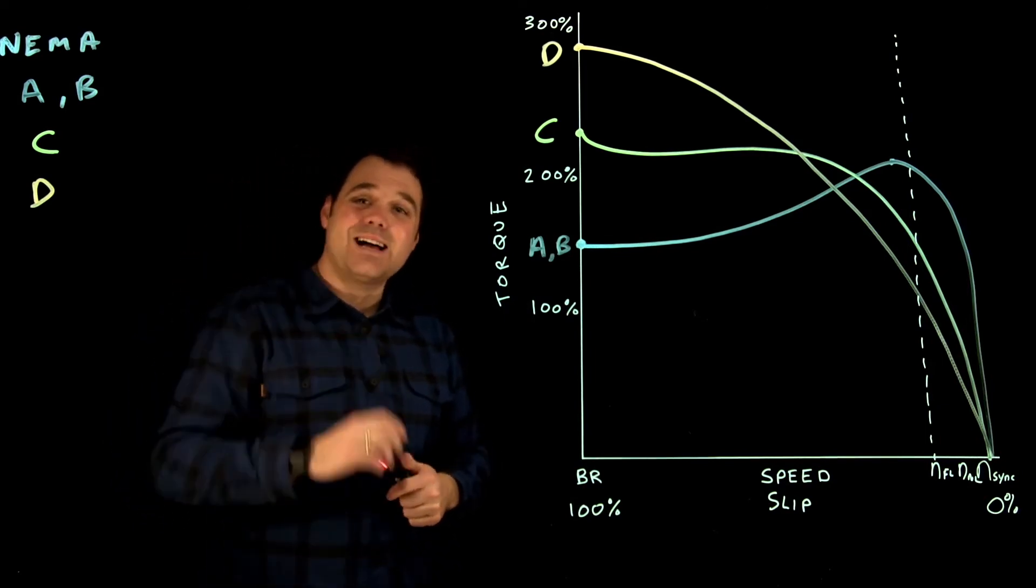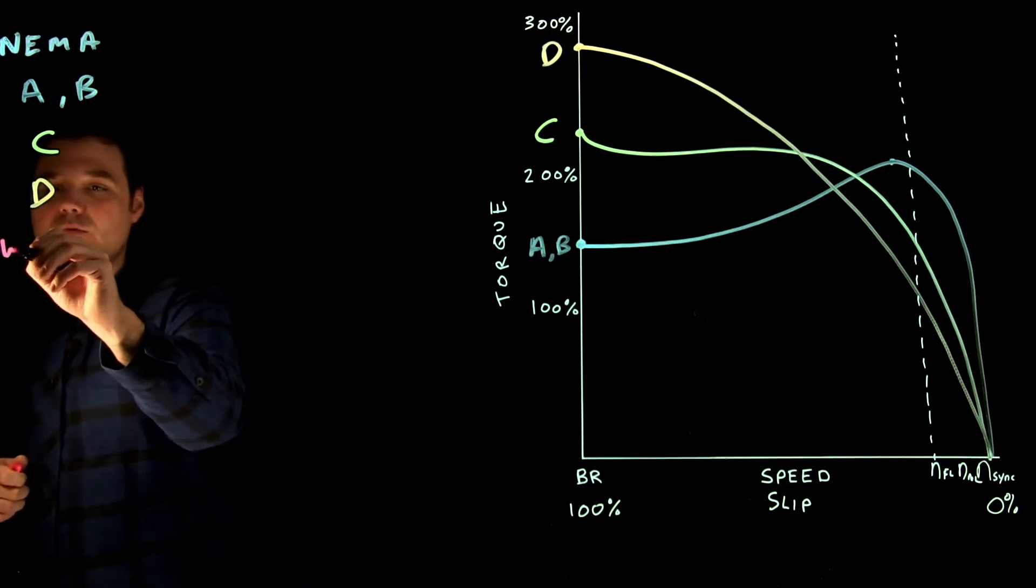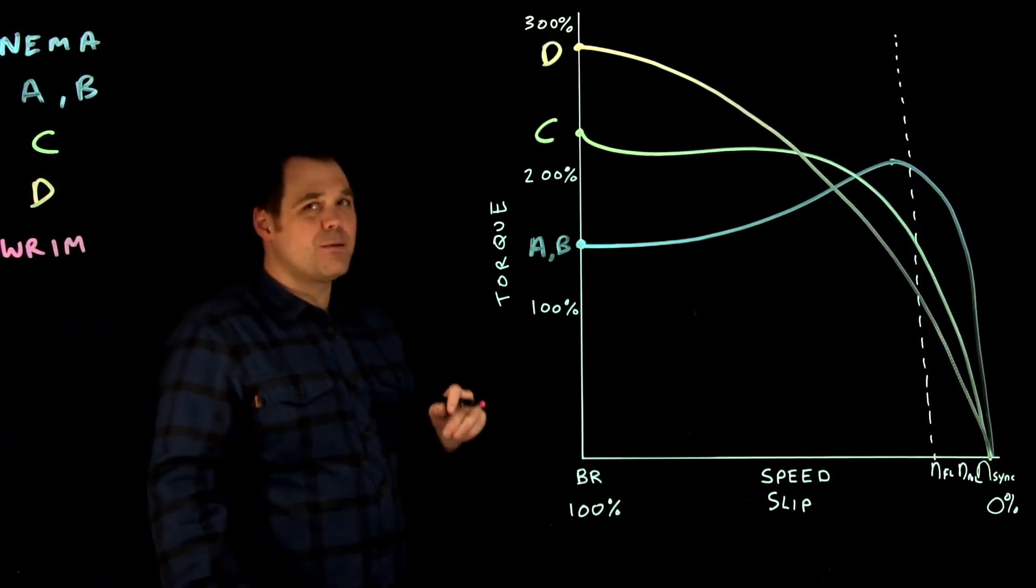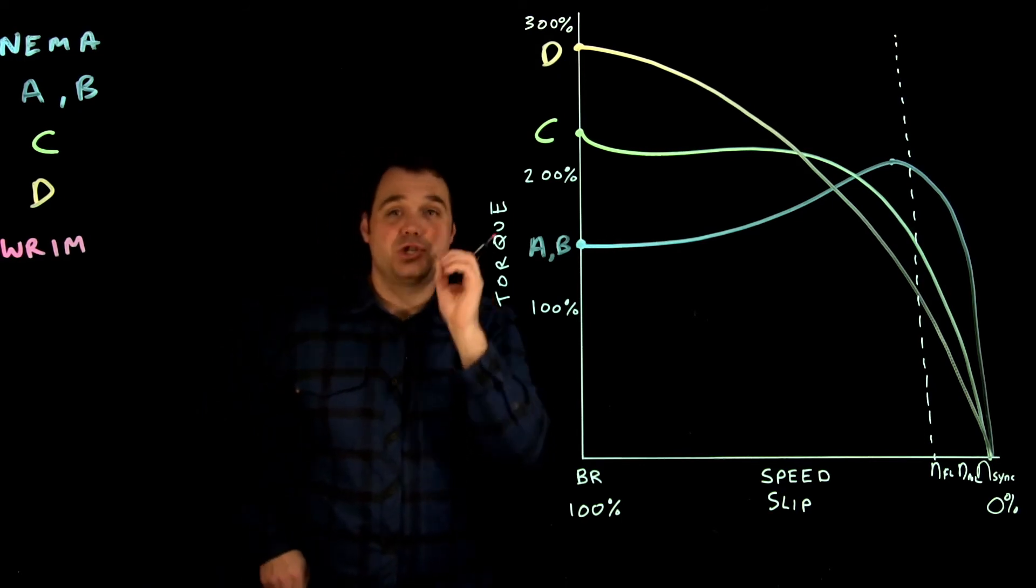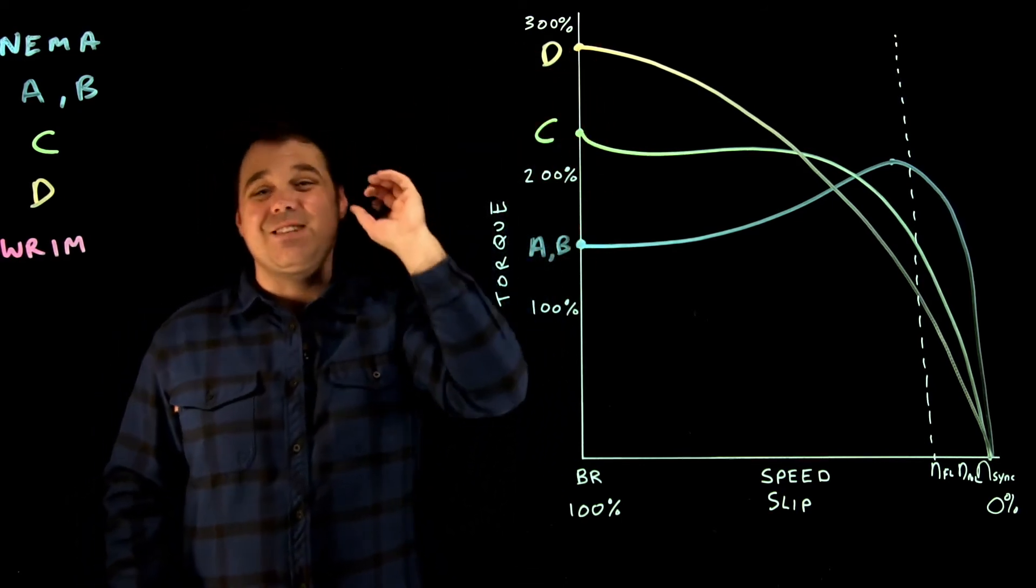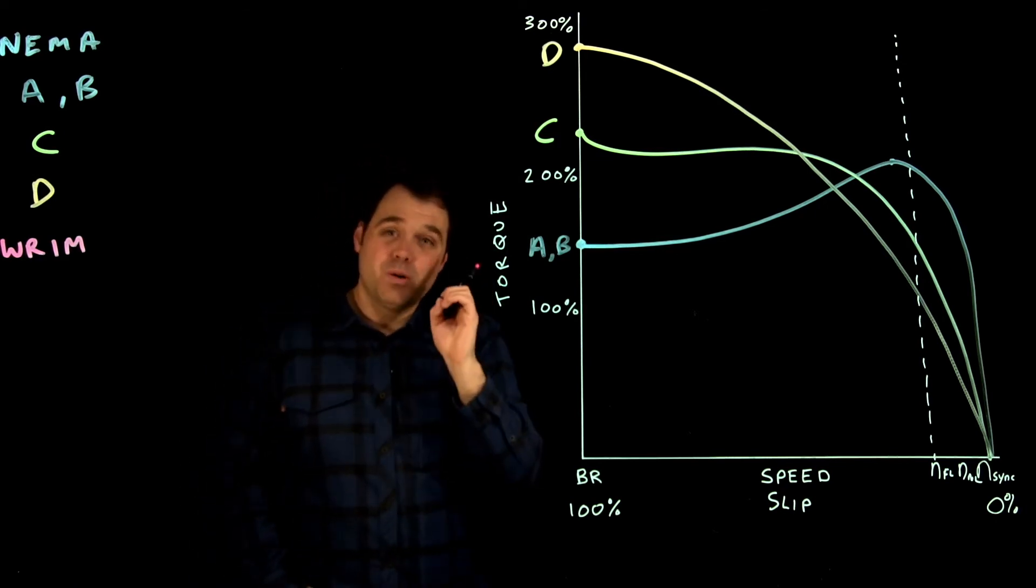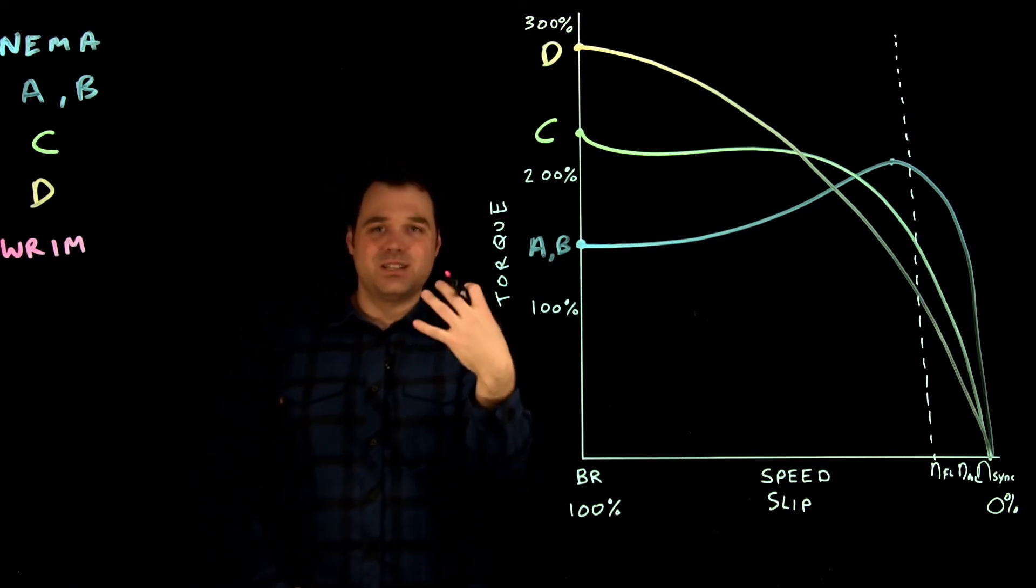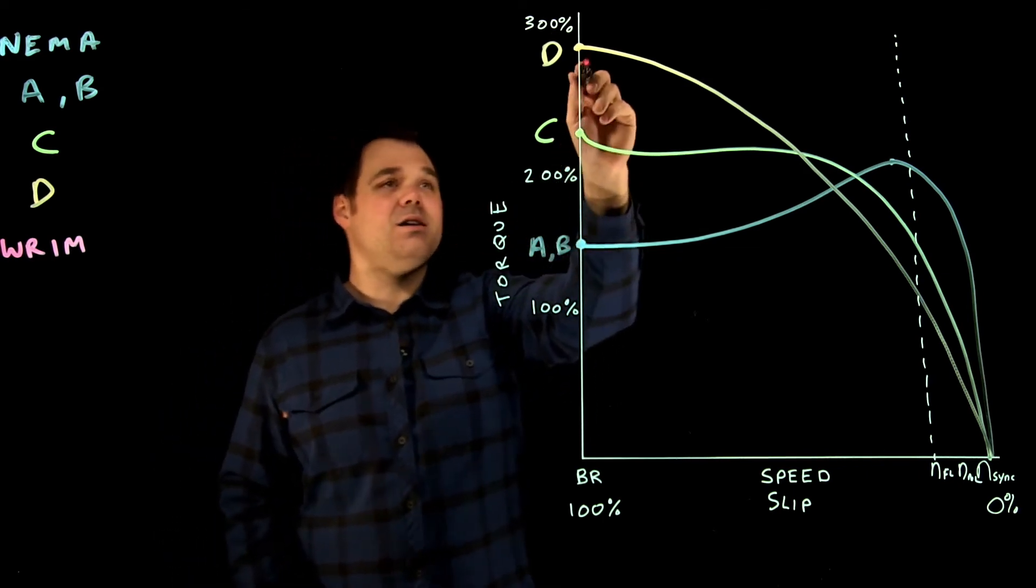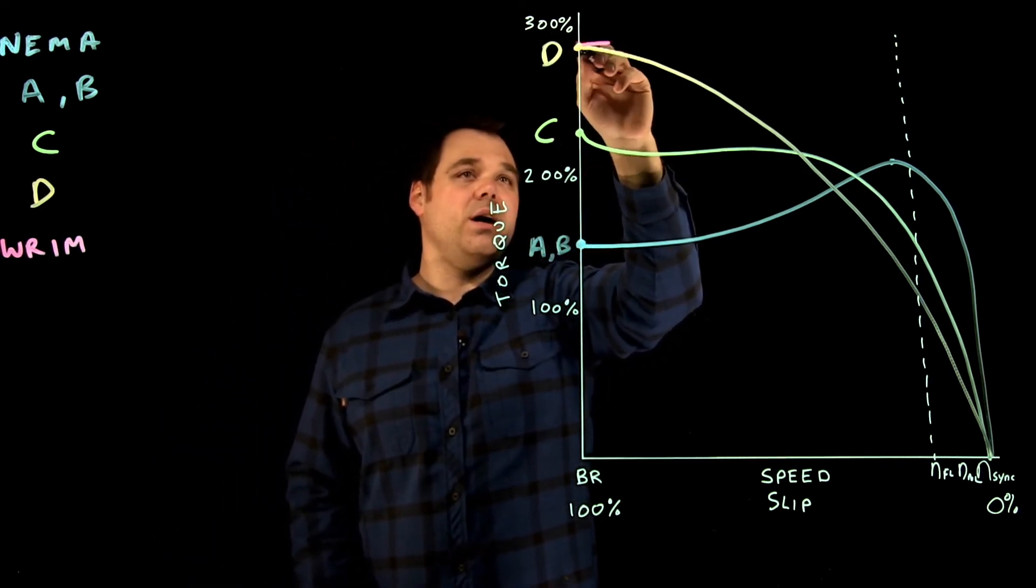But of course, the last one I want to talk about is that wound rotor induction motor rotor. The wound rotor induction motor, remember, that's the one with the adjustable resistance. So all of these rotor designs A, B, C and D have a set resistive value. With that wound rotor motor, we're adjusting the resistance, which gives me the room to play. So I can keep my torque really high.